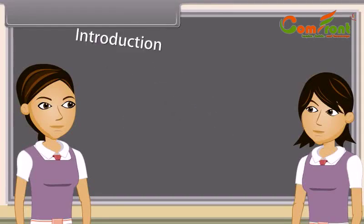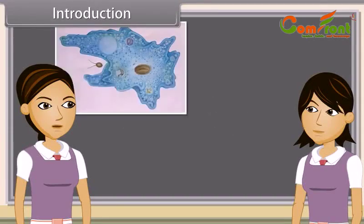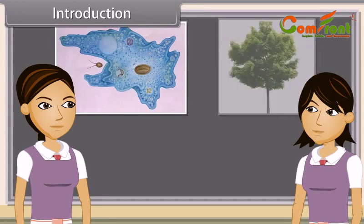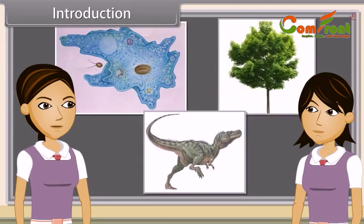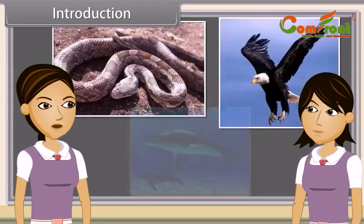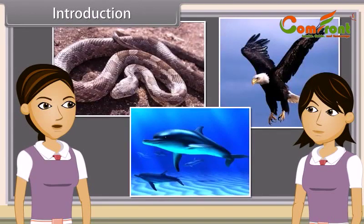Can you name this organism? Yeah, this is amoeba. Name these organisms as well. The first one is a tree and the second a dinosaur. Identify these creatures. Snake, eagle and dolphins.